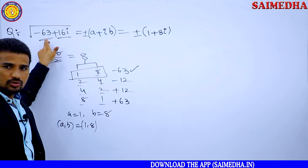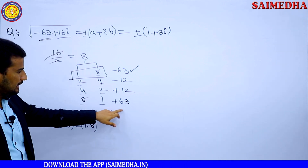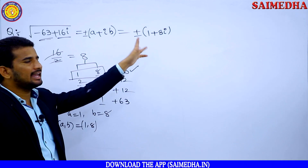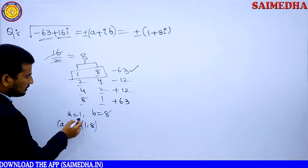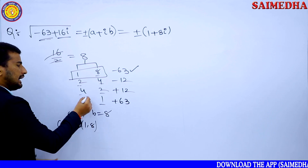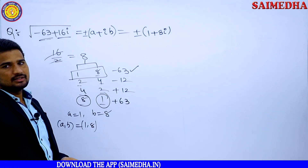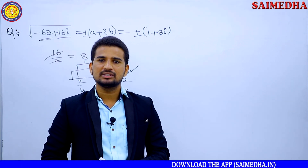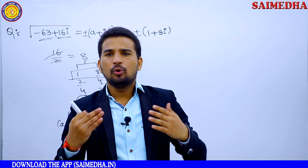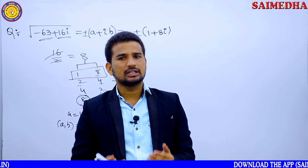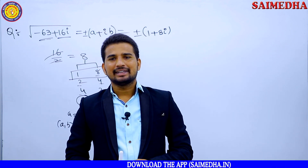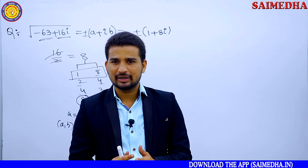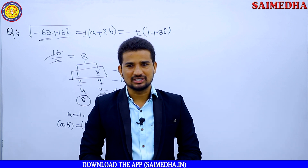The examiner might also ask with +63. When the real part is +63, the combination of 8 and 1 is reversed: a = 8 and b = 1. This is a very important observation in complex number problems. Please try to analyze it and apply it to more problems — you will definitely get the answer. Thank you so much for watching. Please like and subscribe to this channel. This is Mukesh Bidja, signing off.